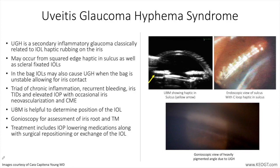Uveitis glaucoma hyphema syndrome, also known as UGH syndrome, is a secondary inflammatory glaucoma classically related to an intraocular lens haptic and or optic rubbing on anterior chamber uveal and vascular structures, frequently involving the posterior surface of the iris and surrounding tissues. UGH syndrome is more likely to occur when squared-edge haptics, a design feature of most single-piece acrylic lenses commercialized today, are placed in the sulcus.